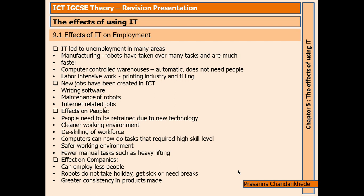Effects of IT on employment: IT has led to unemployment in many areas. In manufacturing, robots have taken over many tasks and are much faster — for example, robots manufacturing cars can work 24 hours without breaks, whereas humans require wages, breaks, and cannot work continuously. Computer-controlled warehouses are automated and do not need people, and this also affects the printing industry and filing.